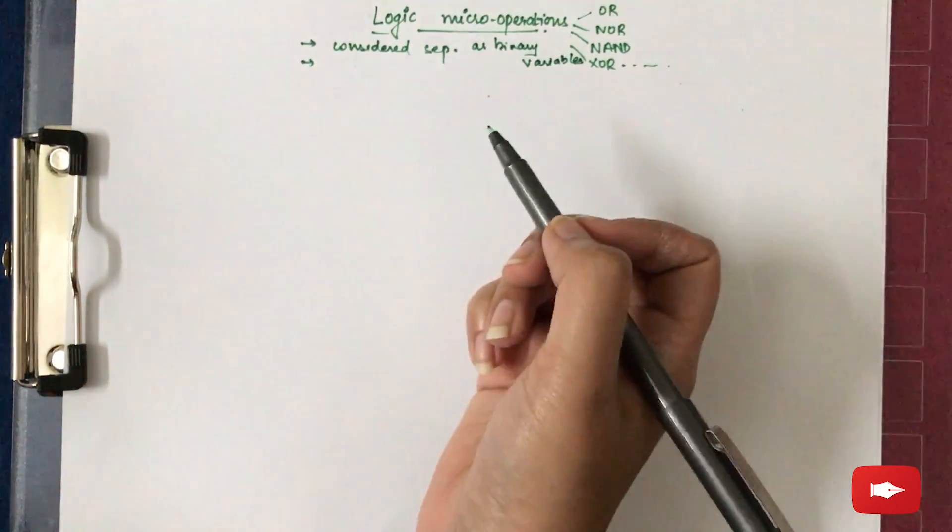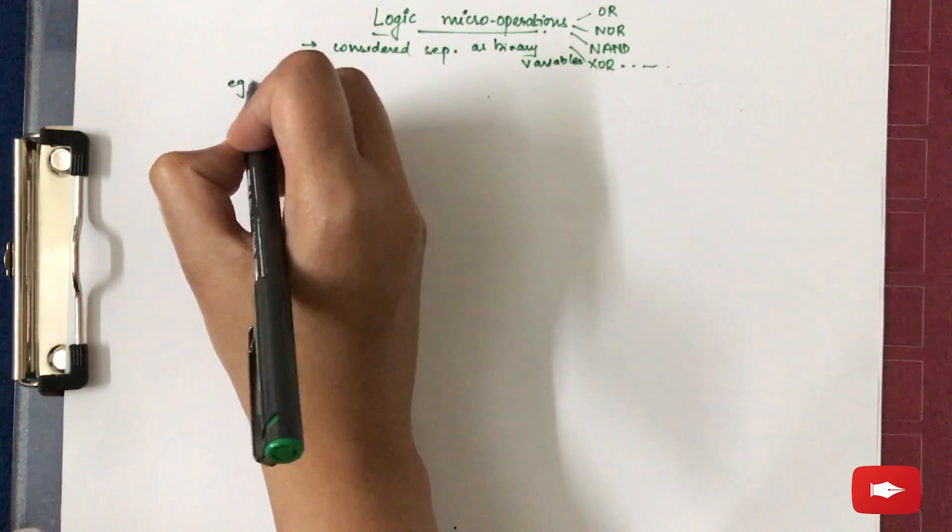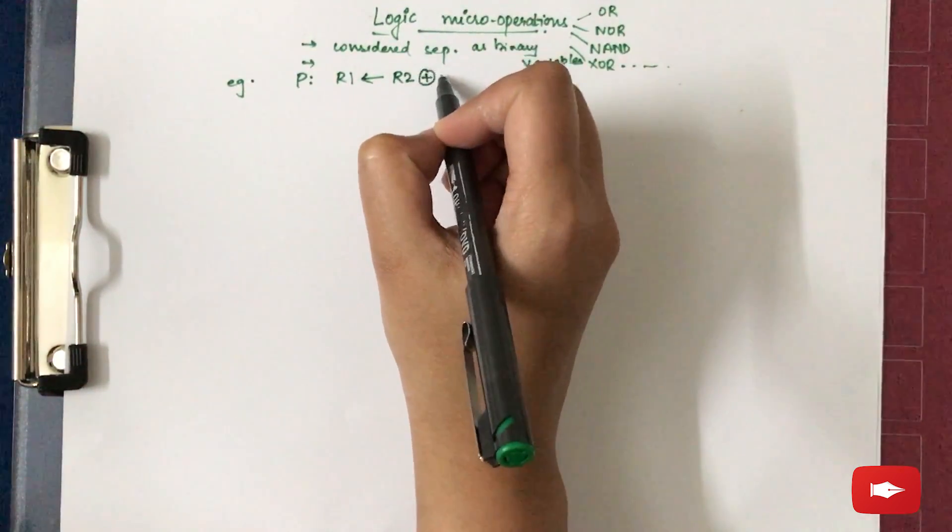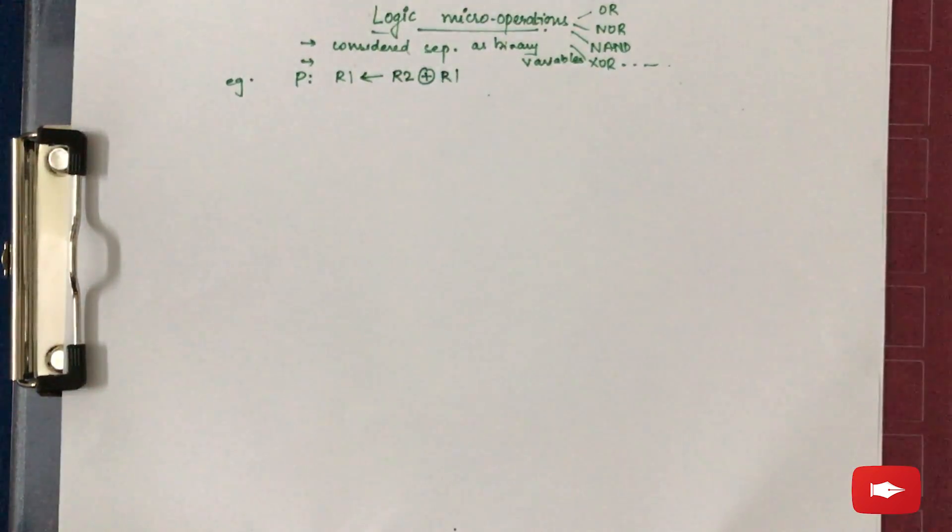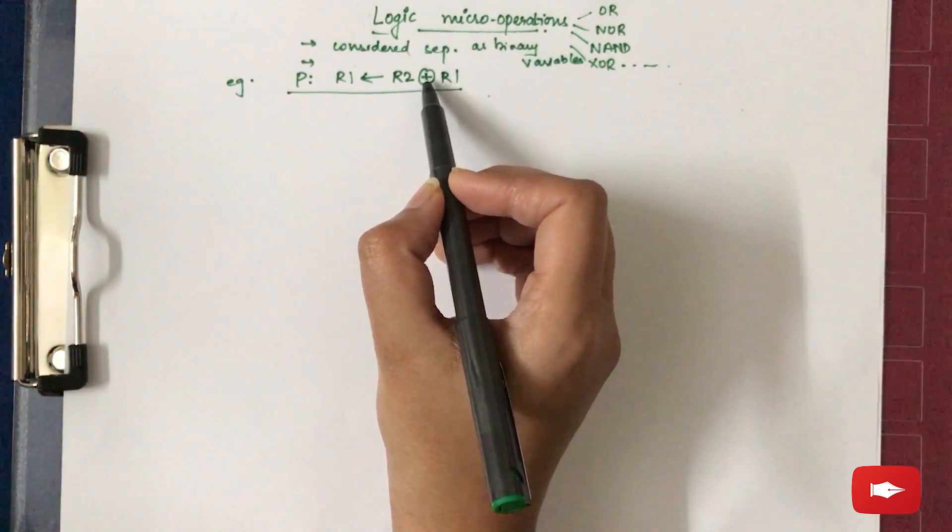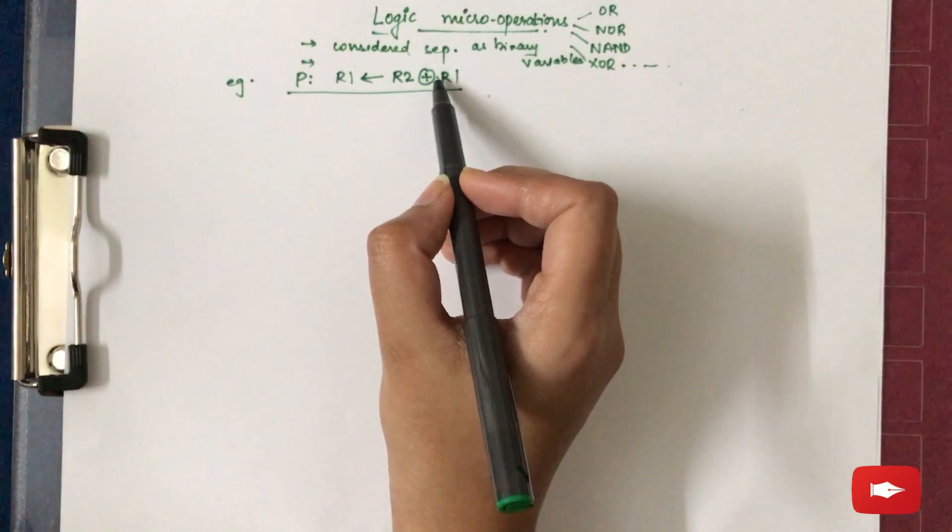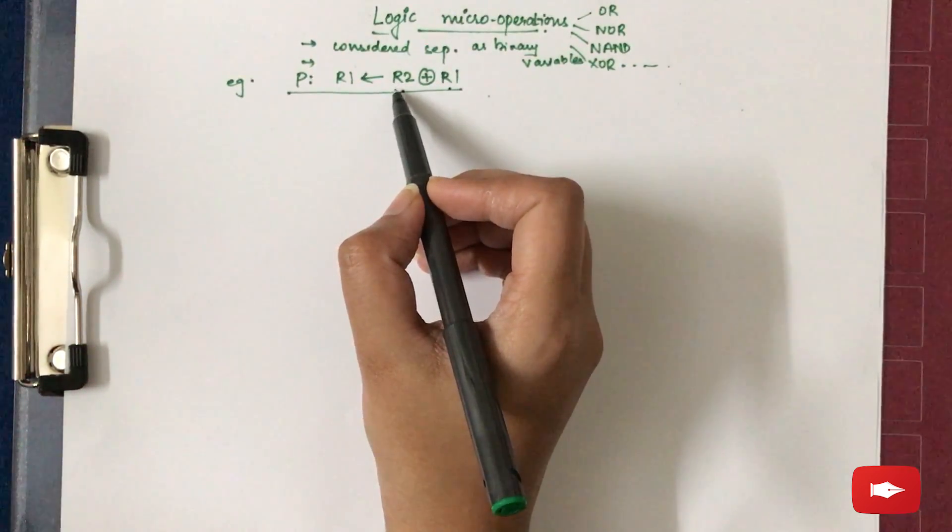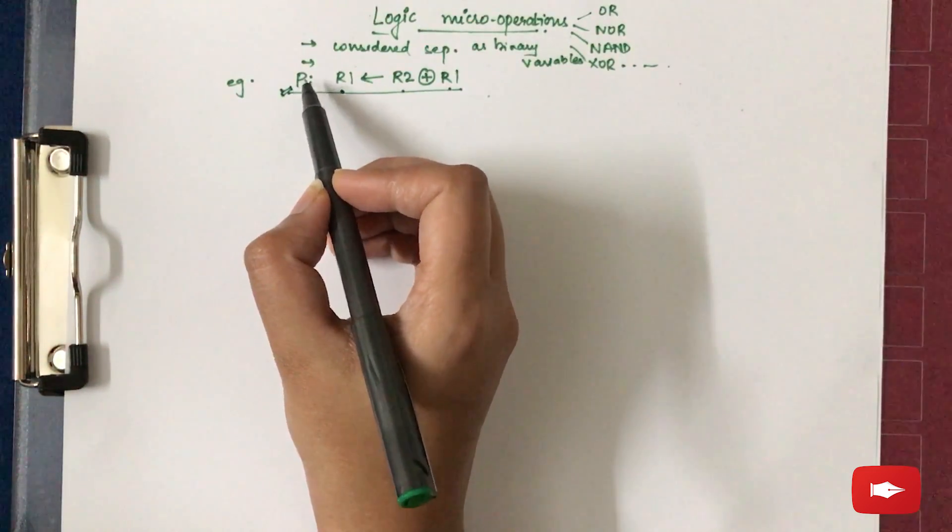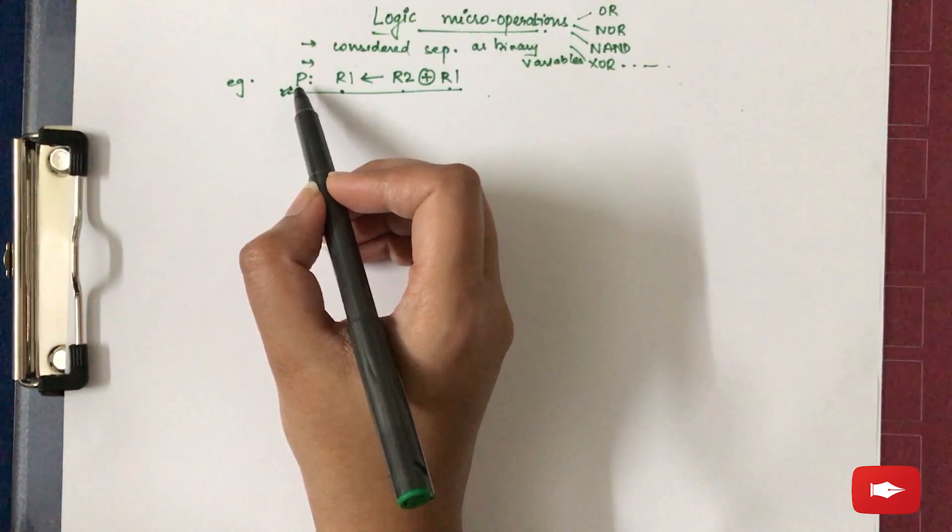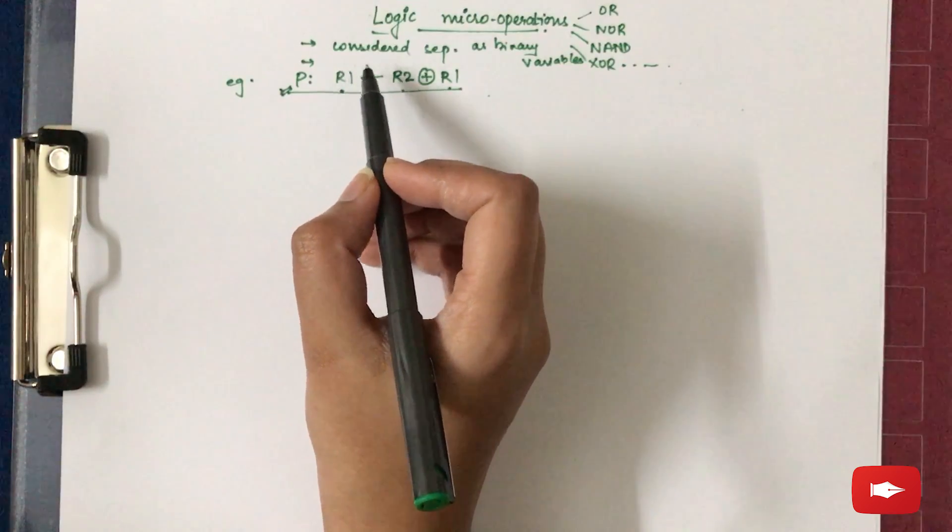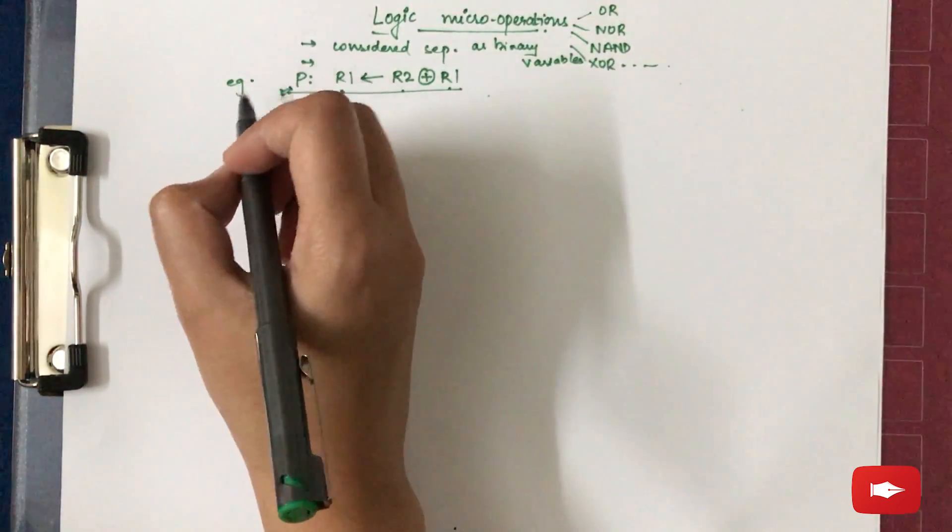Let us consider an example: P: R1 ← R1 ⊕ R2. What does this expression represent? This expression represents the EXOR gate, exclusive OR micro operation, to be performed between two registers R1 and R2, and the result to be stored in R1 with a controlled variable P. The controlled variable P says that if the value of P will be 1, this operation will be performed; otherwise it will not be performed.